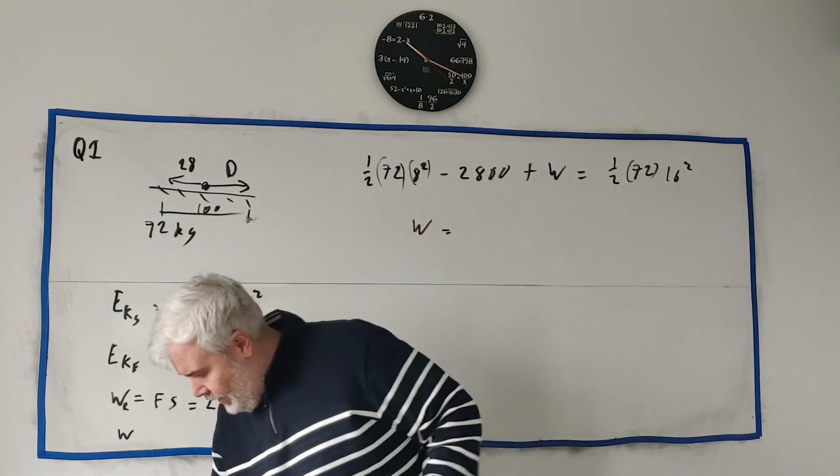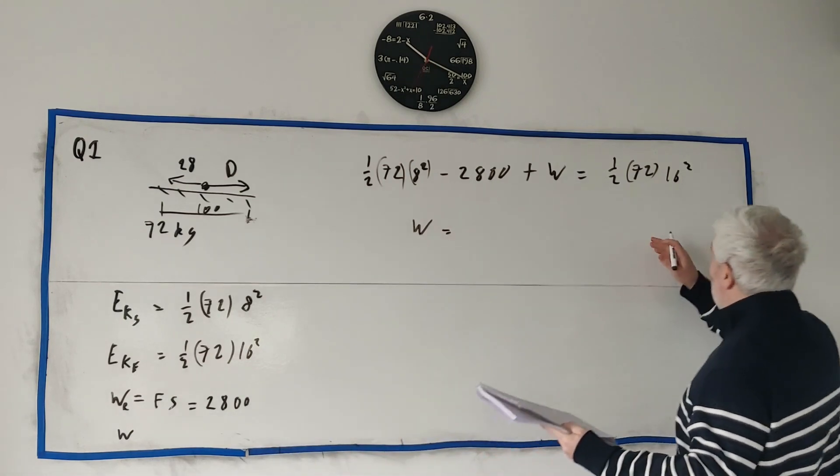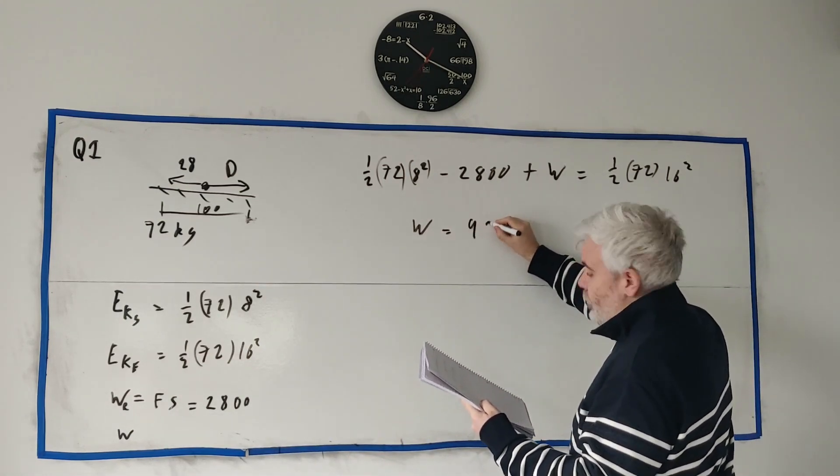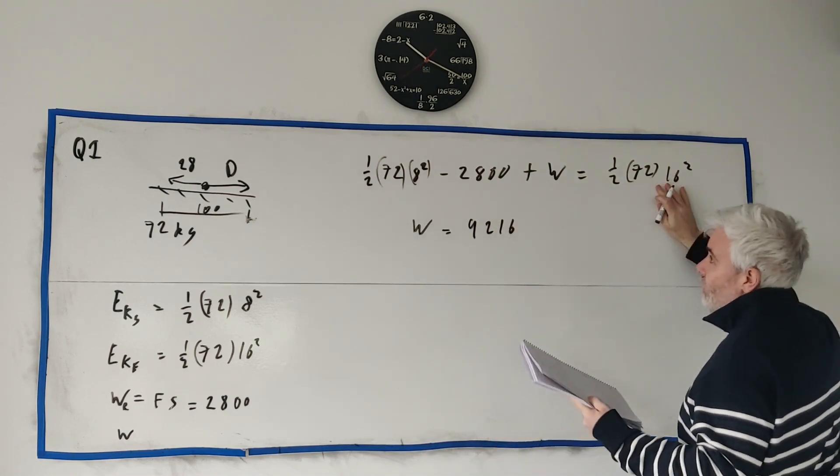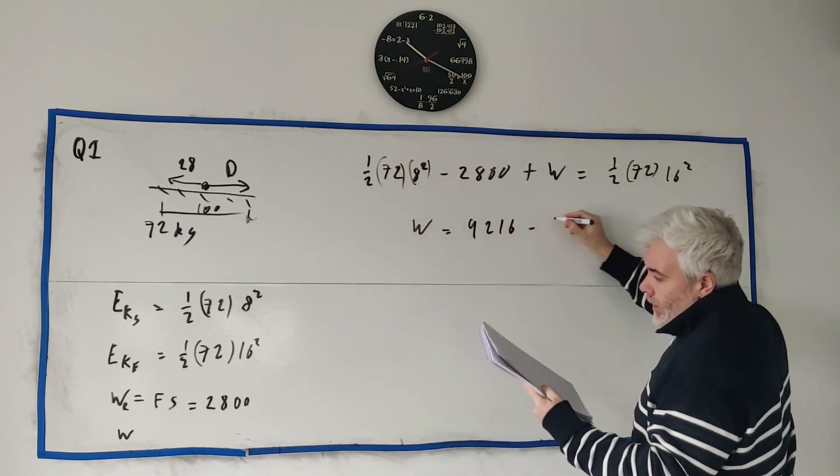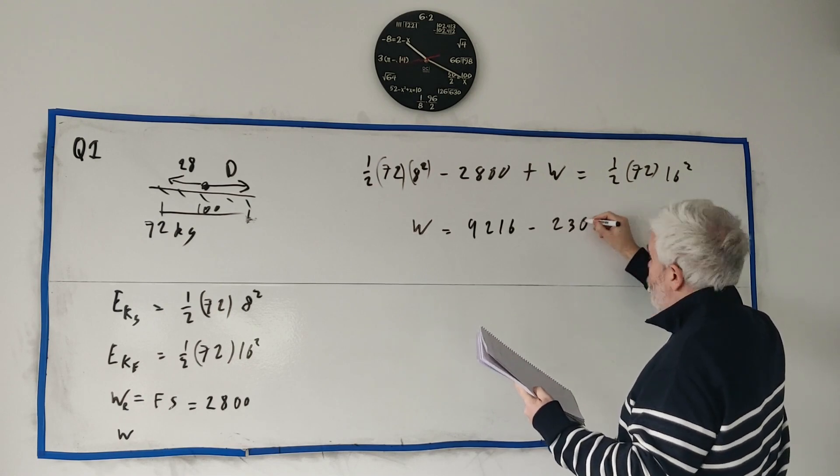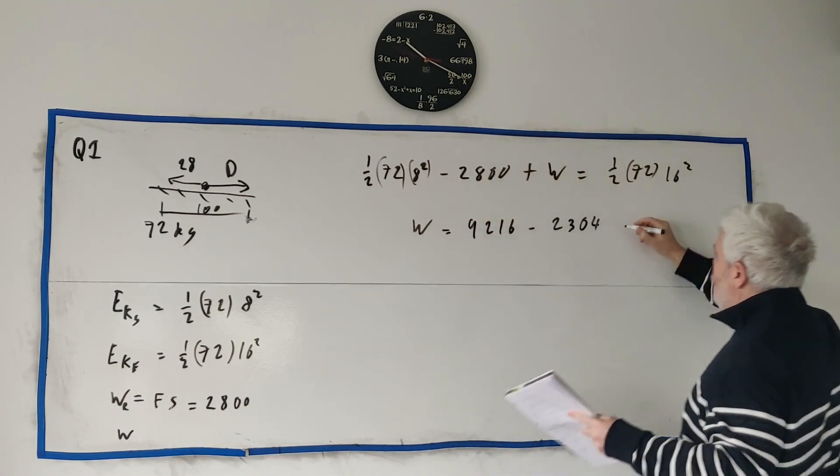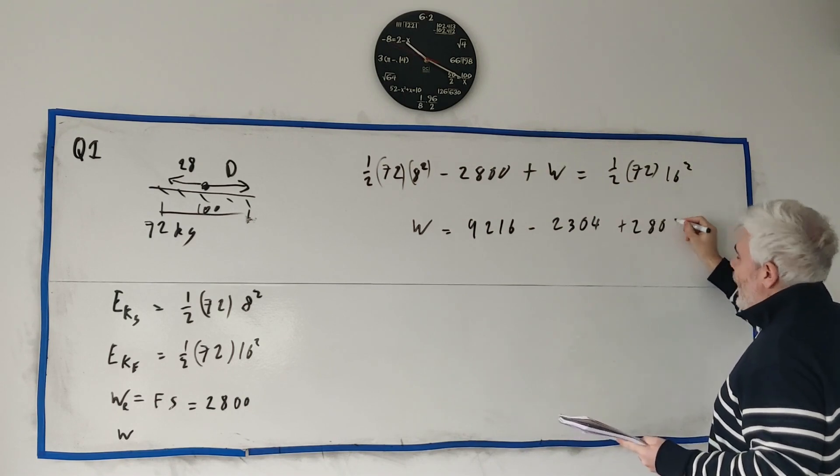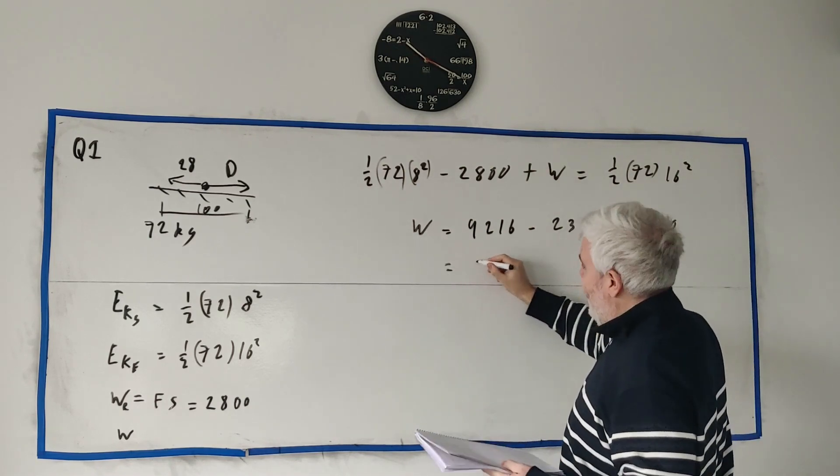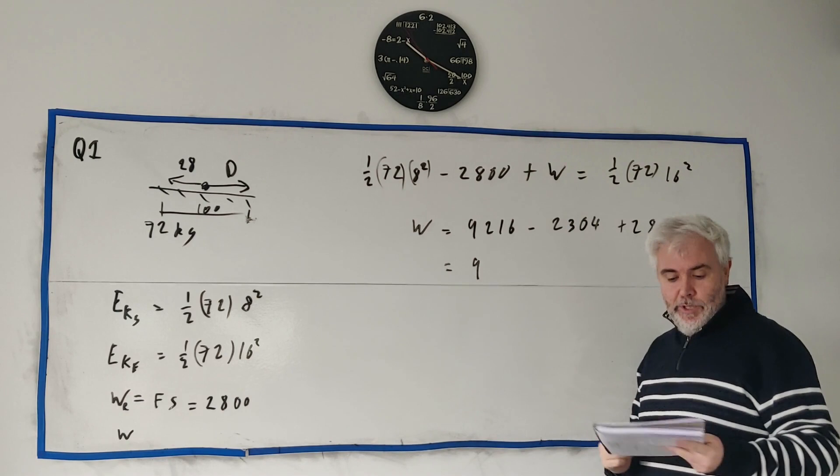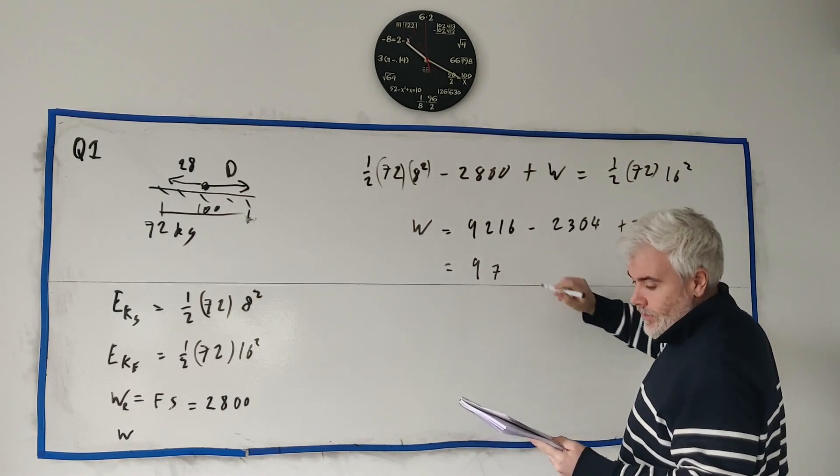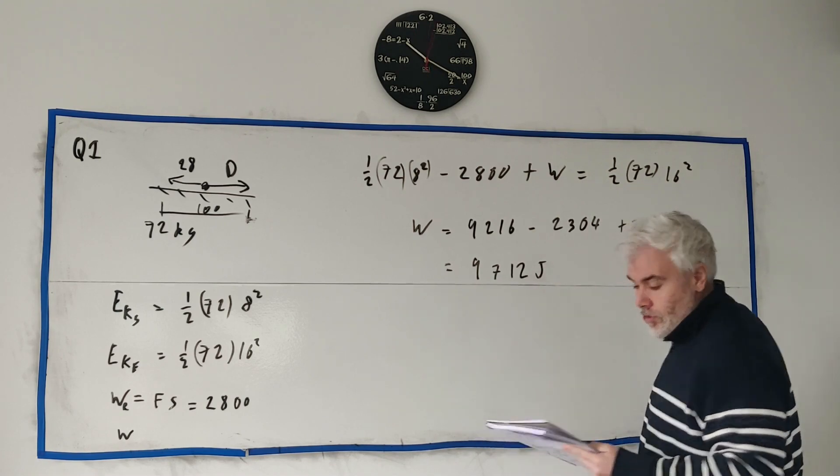W, what's this 16 squared part. That'll equal 9,216. And that's from here. Minus this guy is 2,304. These are all joules. And then this will turn into a plus, plus 2,800 joules. Put all that together. The cyclist must have produced work of 9,712 joules. And that's the same answer we got at the other part, I think.